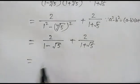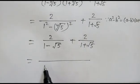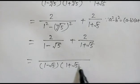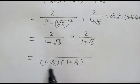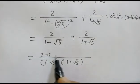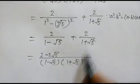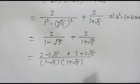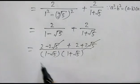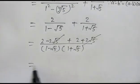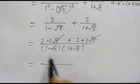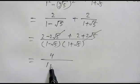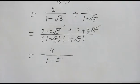Now adding these two fractions, we take the LCM of (1 minus square root of 5) and (1 plus square root of 5). The numerator becomes 2 minus 2 square root of 5, plus 2 plus 2 square root of 5. The square root of 5 terms cancel out, leaving 2 plus 2, which is 4. The denominator is again A squared minus B squared, giving 1 minus 5.